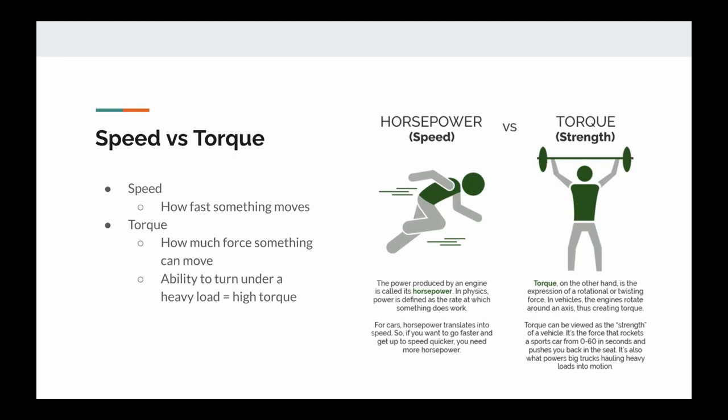In order to fully understand gears, you must understand the difference between speed and torque. Speed is how fast something moves, so if a wheel is spinning at 60 miles per hour, you would have more speed than a wheel that's moving at 30 miles per hour.